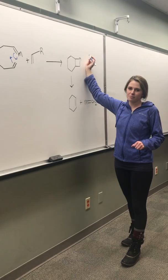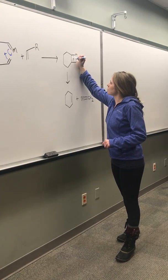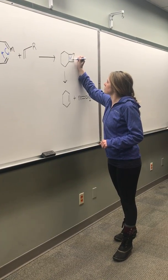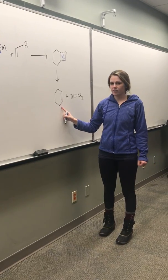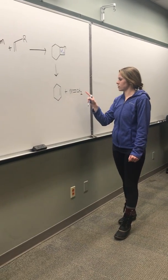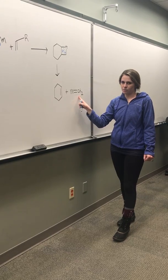And then it undergoes another retro cycloaddition, where this bond will swing down and that bond swings there. We end up with our cyclohexene plus our metal now bonded to another one of our CH2 groups that leaves.